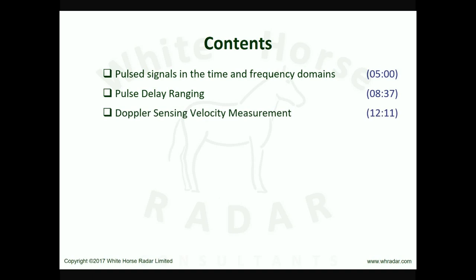The measurement of velocity is done by sensing the Doppler shift of the target return — that is, the small change in frequency of a received signal with respect to the transmitted signal — which is dependent on the relative velocity between the radar and target. Target velocity measurement takes place in the frequency domain, so it is necessary to consider the signal's spectrum. The choice of PRF can result in an ambiguous range measurement, but range ambiguity can be avoided if a suitably low value of PRF is used, constituting a low PRF waveform.